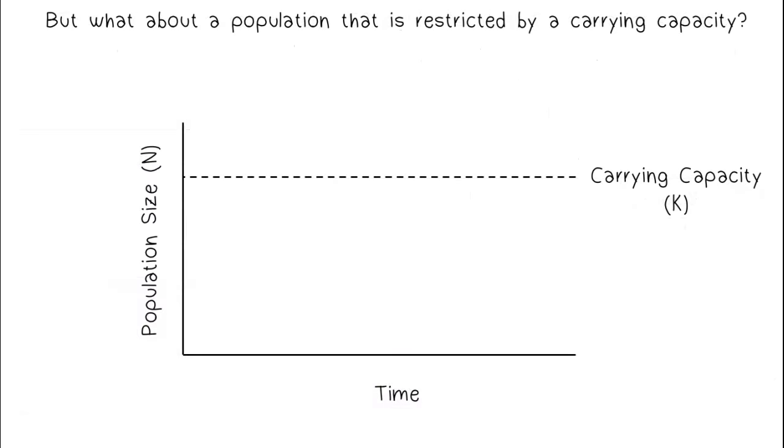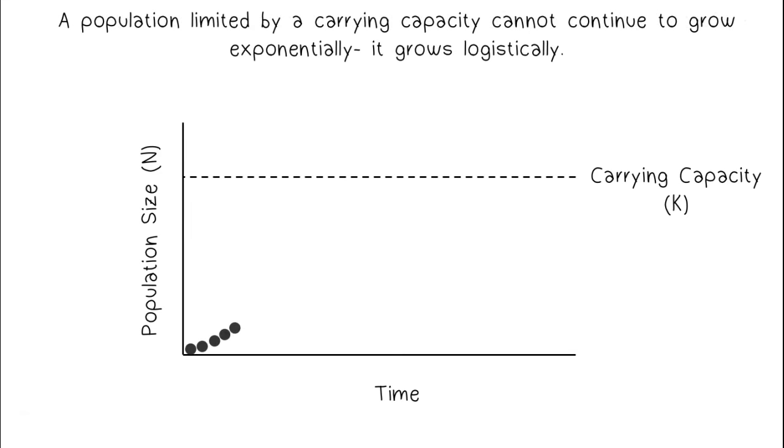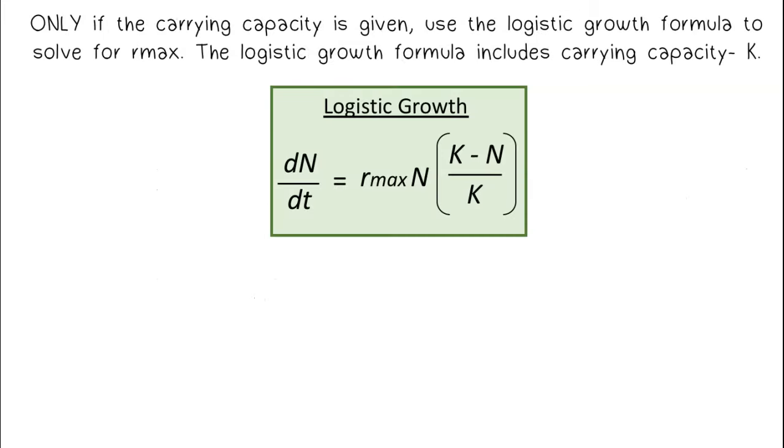But what about a population that is restricted by a carrying capacity? A population limited by a carrying capacity cannot continue to grow exponentially. It grows logistically. Only if the carrying capacity is given, use the logistic growth formula to solve for rmax. The logistic growth formula includes carrying capacity, the variable k.